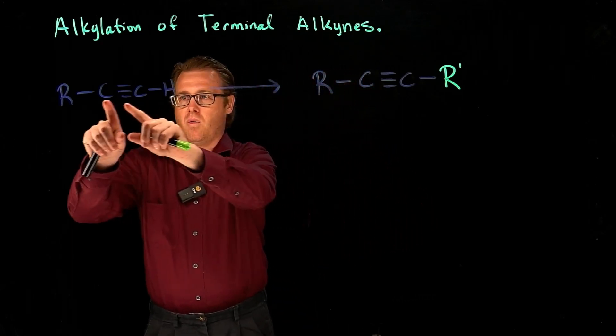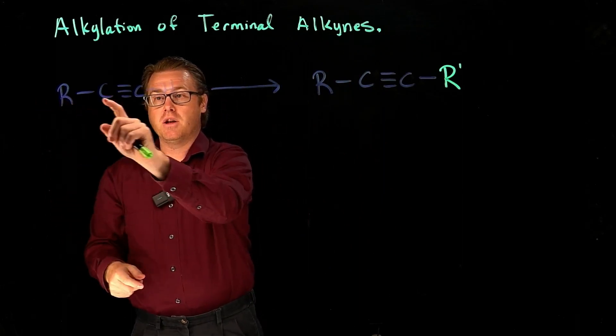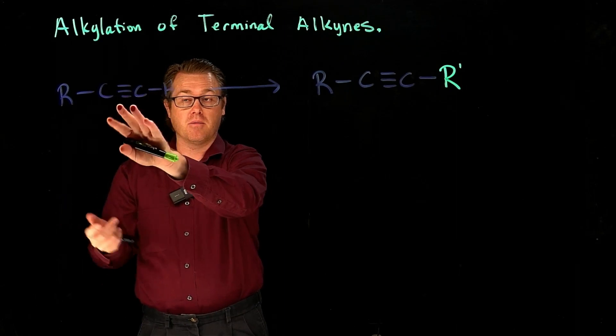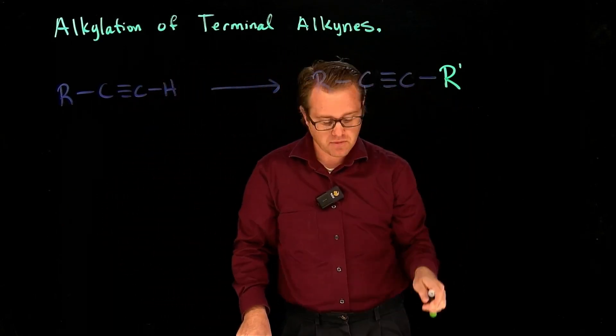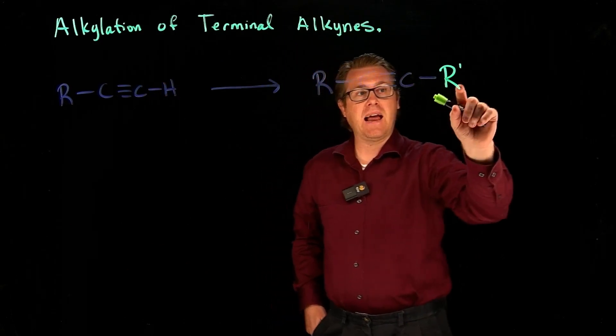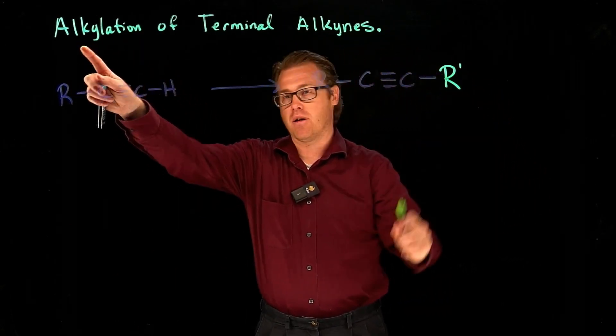So do you see here we have an R, so let's just count that as a carbon, one, two, three carbons in our starting material, and at the end we have four carbons. So we're just adding an alkyl group. That's what alkylation is, adding that R, that green one.